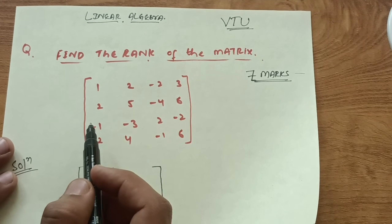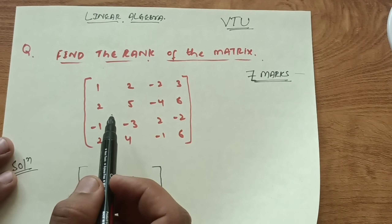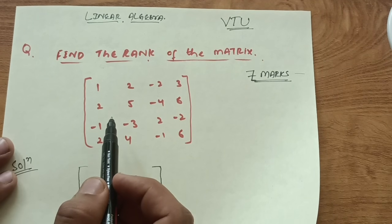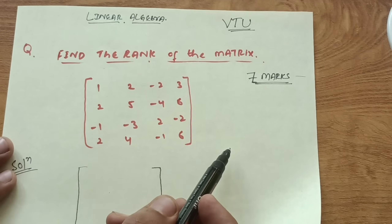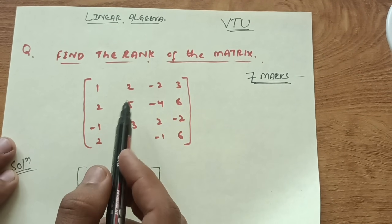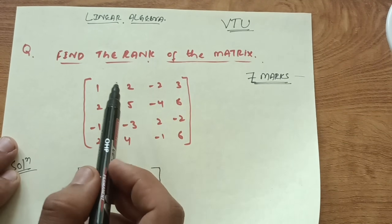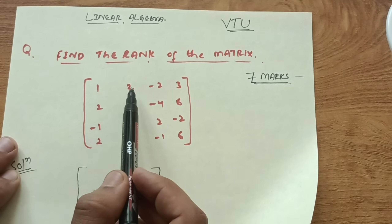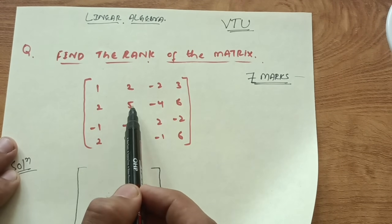In this question I have taken an example. The matrix is: row 1 is 1, 2, -2, 3; row 2 is 2, 5, -4, 6; and the process continues.